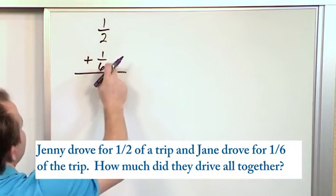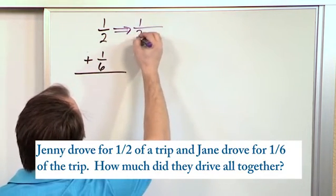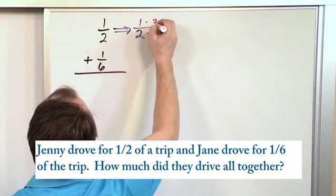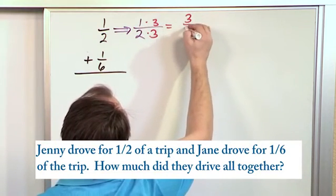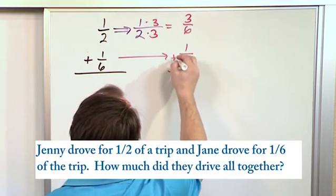But we know easily we can change the top one to have a denominator of six, because two times three is six. So we'll put times three and times three, and then on the top, that will be equal to three-sixths. And over here, we don't have to change anything. We just keep one-sixth, and we're adding these together.